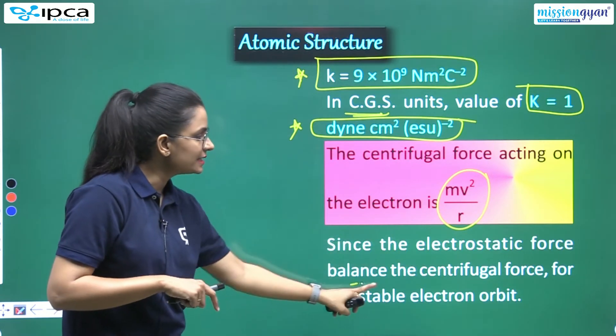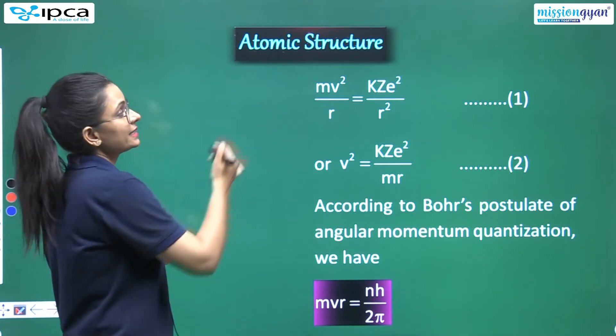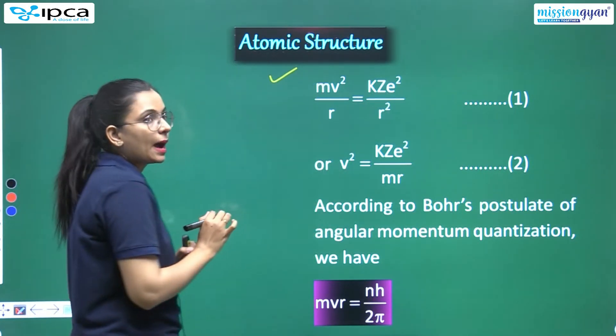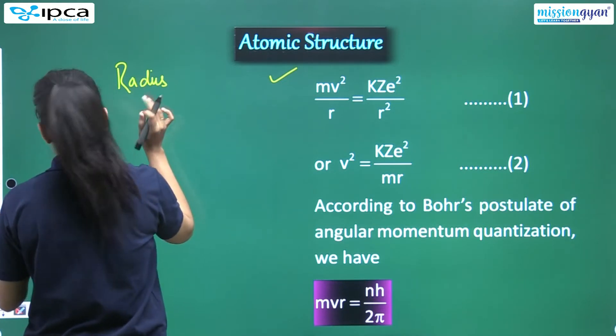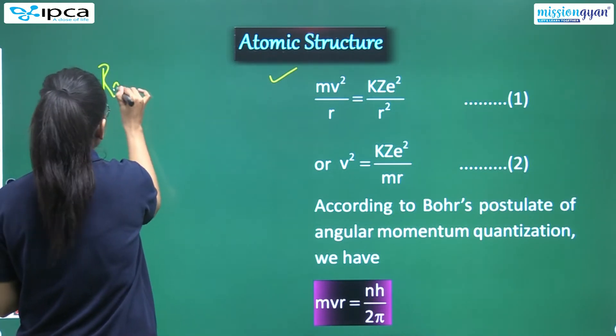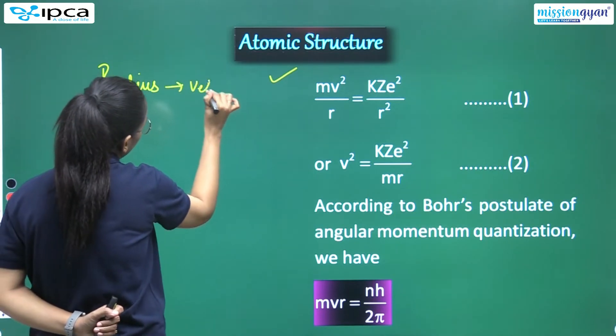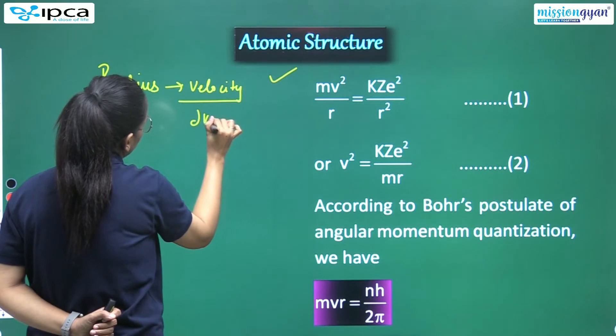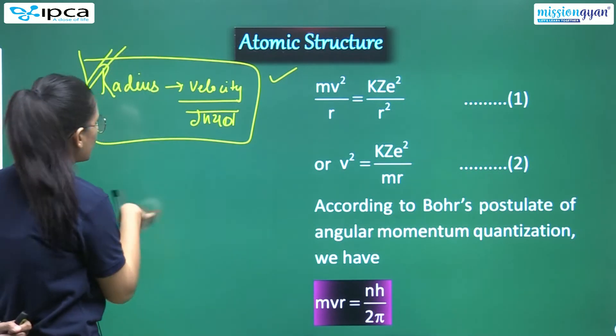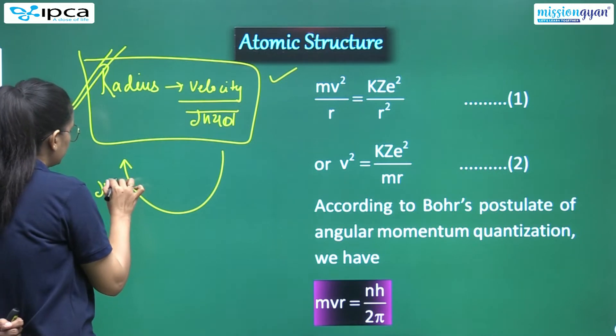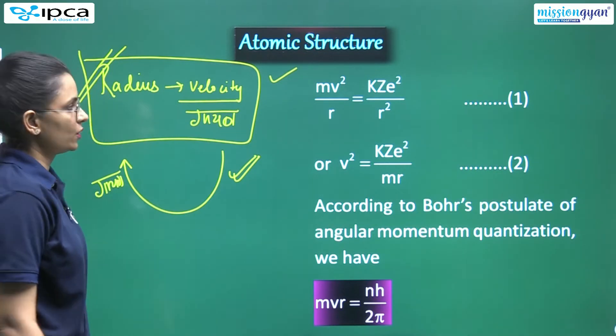Now listen. The centrifugal force acting on electron - you call it what? MV square by R, you know? So we shouldn't be confused. This keeps coming again and again - I've already told you that centrifugal force is mv square by R. So since the electrostatic force balances the centrifugal force for stable electron orbit, can you represent it this way? Mv square by R - we wrote this. Then what do I have to do here? We have to calculate radius. So when you have to calculate radius, what will you do? Eliminate velocity, right? That's the concept - eliminate velocity and radius will come out.